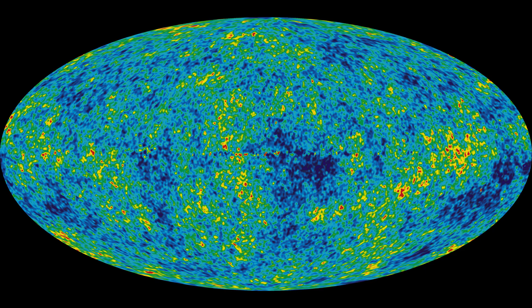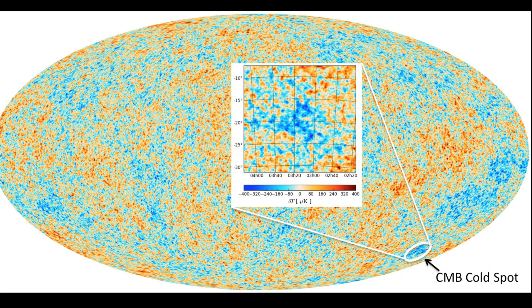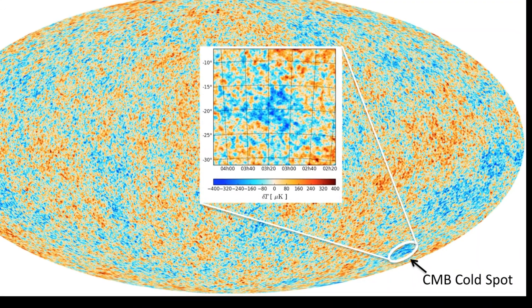However, there are also anomalies. After analyzing the data obtained from the WMAP observatories, we can conclude that there is a cold spot on the homogeneous relic radiation.